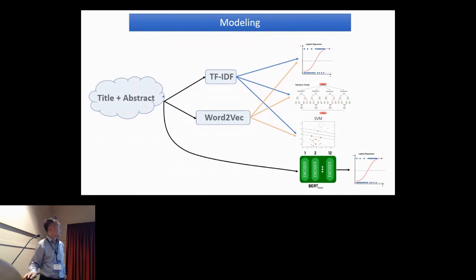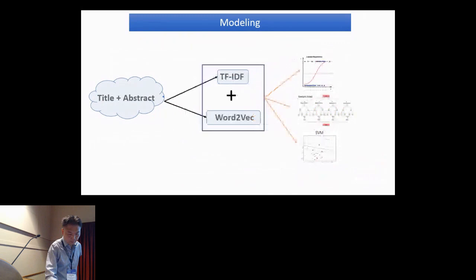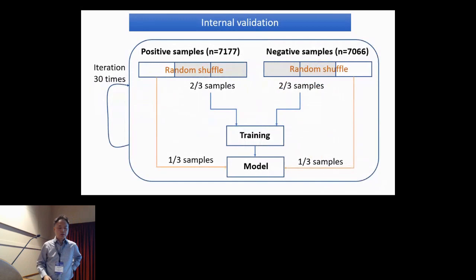We combined title and abstract for each paper, and using TF-IDF or Word2Vec vectorization techniques we extracted features. We input them into machine learning models including logistic regression, random forest, and SVM for benchmark tests. We also evaluated the performance of BERT Base using the vector values from the CLS token, inputting them into logistic regression. This is our idea: we think that the vectors from TF-IDF and Word2Vec are somewhat different but can be complementary. So we simply concatenated the two vectors together for modeling and input them into machine learning models. This actually improved the performance, as I'll show you in the results later.